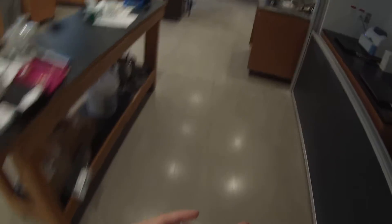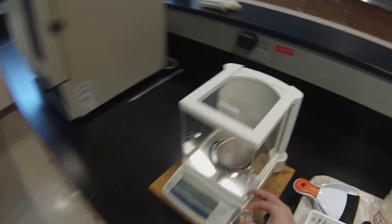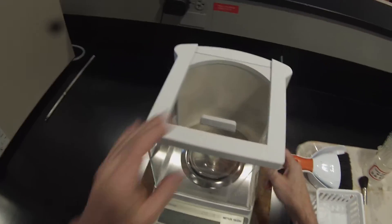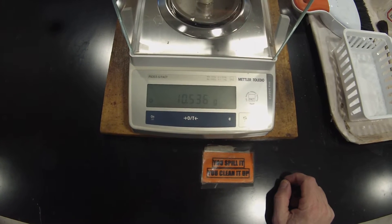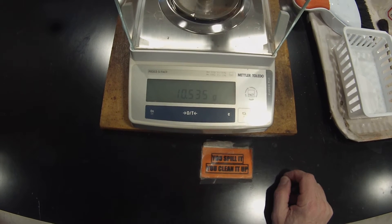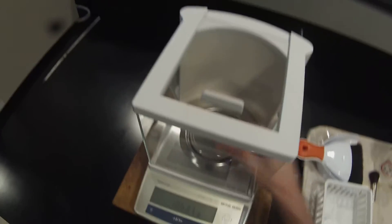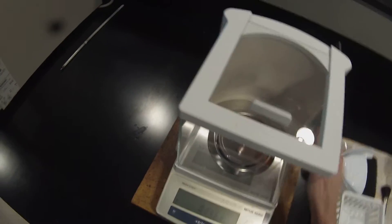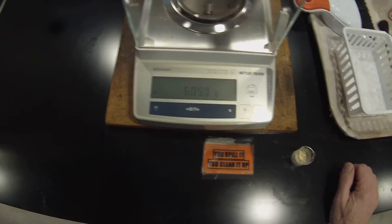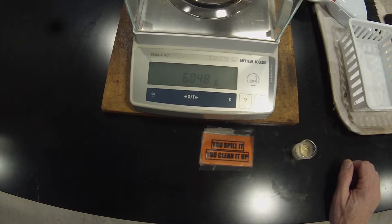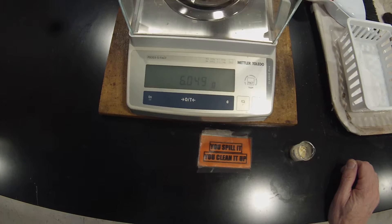So we're going to weigh that beaker and this vial, 60A vial, so we can get accurate percent yield. We're looking at 10.535 grams on that beaker and 6.049 grams on the vial.